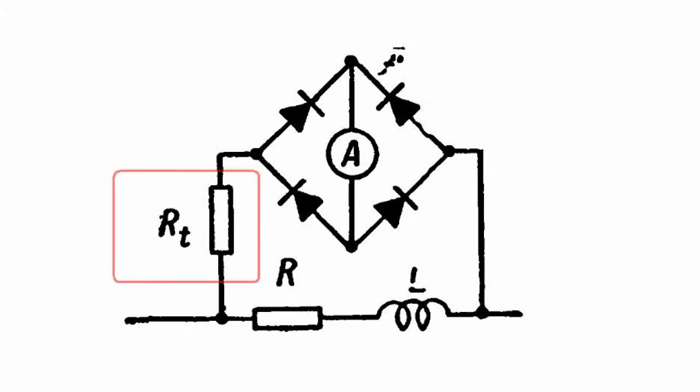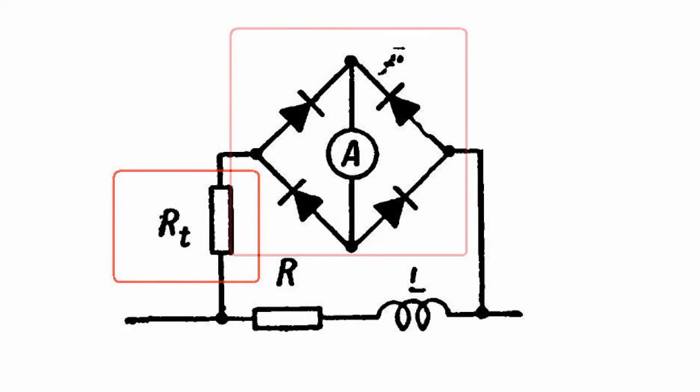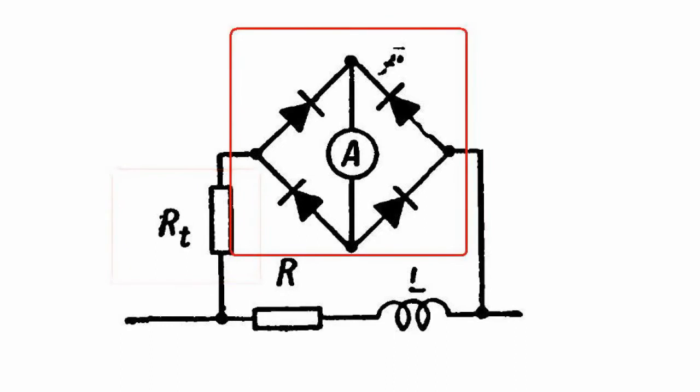Resistance RT is made of material with a high positive temperature resistance factor of about 0.02. It serves to compensate for the negative temperature resistance factor of the rectifiers.